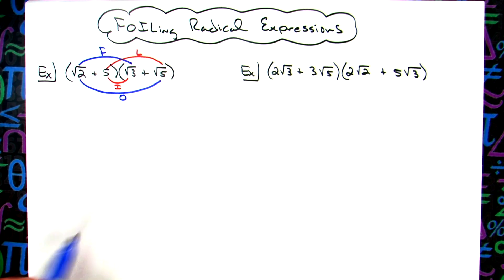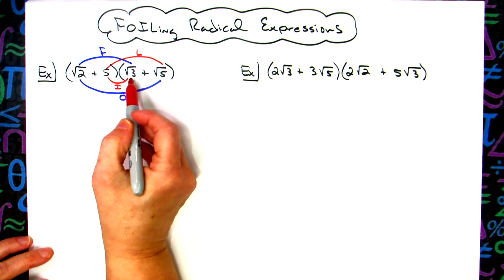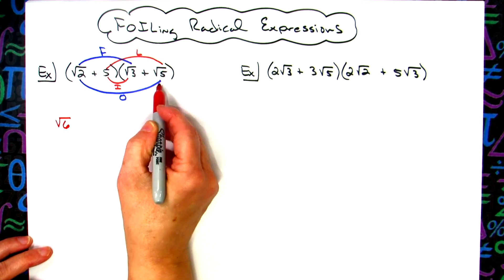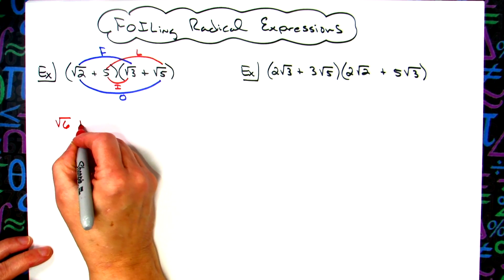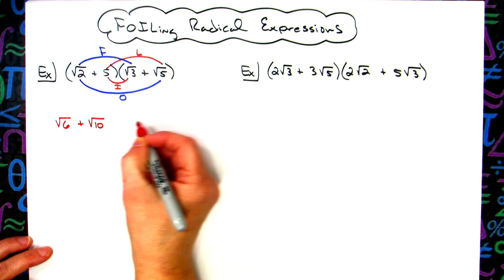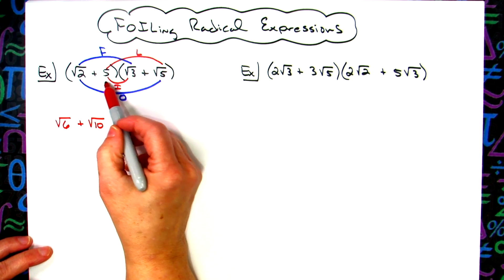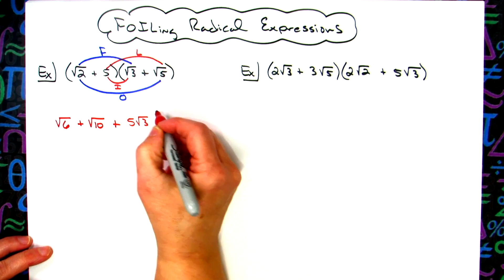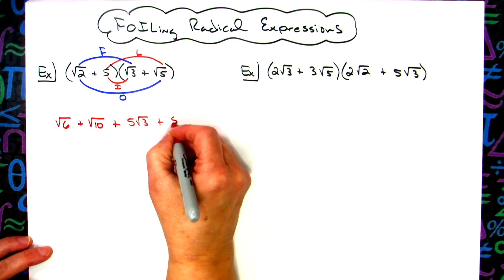We're going to go ahead and do that multiplication. Square root of two times square root of three gives us square root of six. For the outside terms, square root of two times square root of five gives us square root of ten. For the inside terms, five times square root of three is just five square root of three. Then multiplying the last terms, five times square root of five gives us five square root of five.